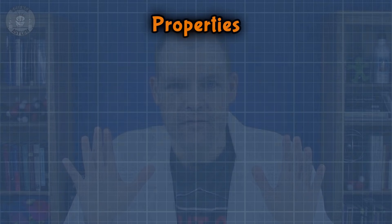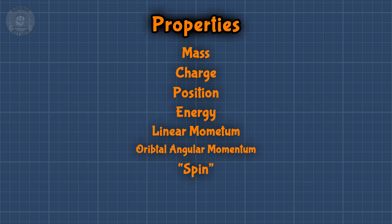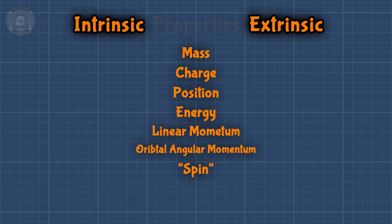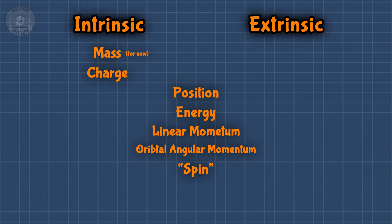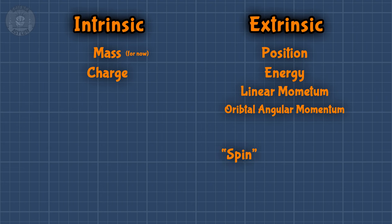Just think of it this way. Particles have all sorts of properties: mass, charge, position, energy, etc. Spin angular momentum, or just spin for short, is one of those properties. We can sort these properties into two categories: properties the particles have because of what they are, and properties they have because of what they are doing. Spin, as it turns out, falls into the first category.